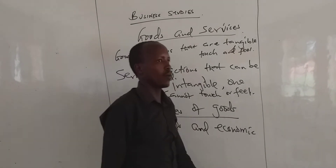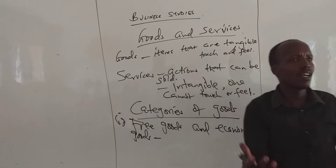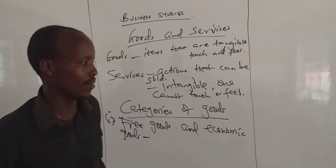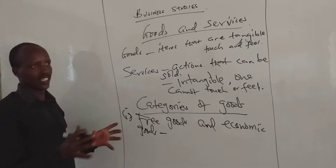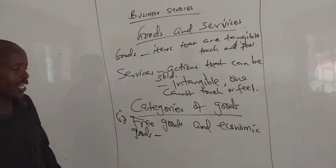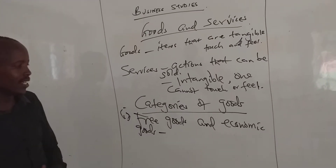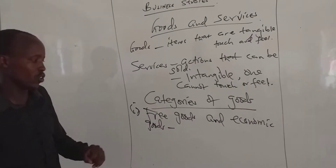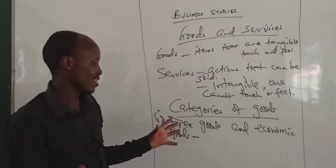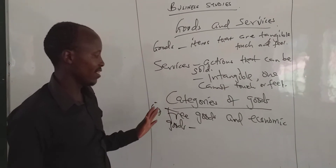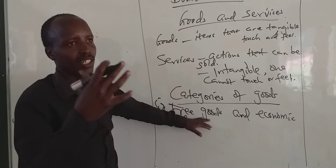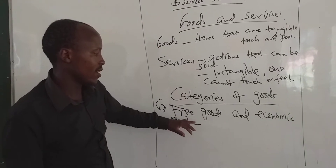Free goods — from the word free, we mean that these are goods which are available as gifts of nature. You don't need to pay anything to get them, so we call them gifts of nature. For example, sunshine — you can see the sun shining and nobody is paying any fees for that. Free goods are available in abundance, they are not limited, they don't have a price. You get them freely — for example sunshine, air, the rivers and so forth.